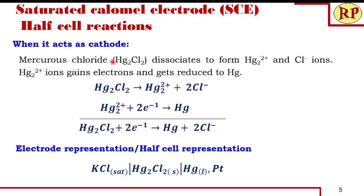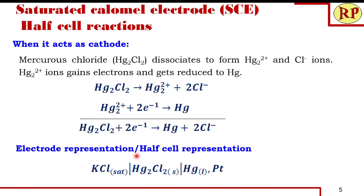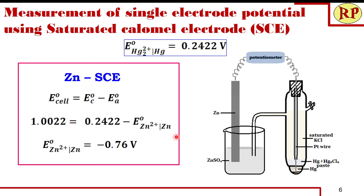When the SCE is coupled with an electrode having a lower standard reduction potential, it acts as a cathode. Mercurous chloride first dissociates into mercurous ions and chloride ions; the mercurous ions then gain electrons to form mercury. The overall cathodic reaction is: Hg₂Cl₂ + 2e⁻ → 2Hg + 2Cl⁻. The half-cell representation is the reverse: Hg₂Cl₂(s) | saturated KCl | Hg(l), Pt.